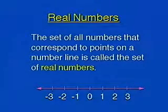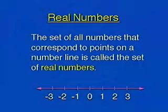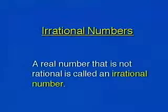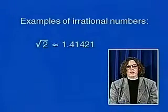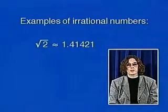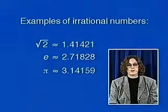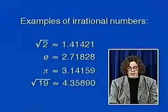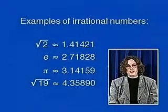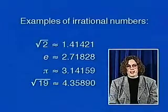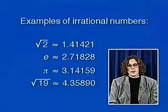All whole numbers, integers, and rational numbers are included in the real numbers. There are also numbers that are not rational but are still real — these cannot be written in the form p over q and are called irrational numbers. Examples include the square root of two (approximately 1.41421), e (approximately 2.71828), pi, and the square root of 19.